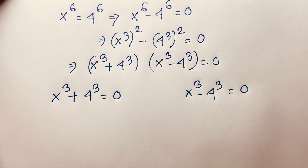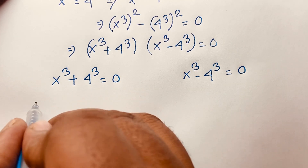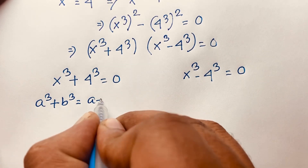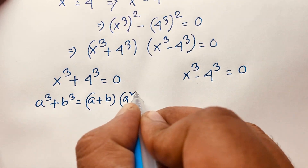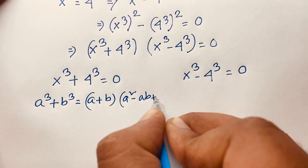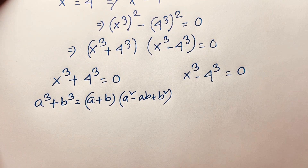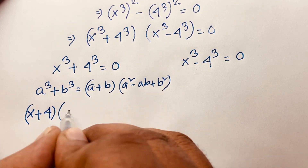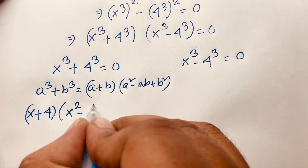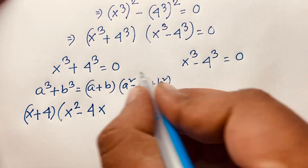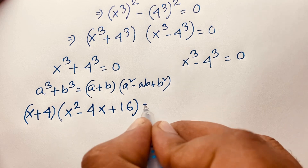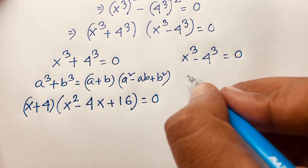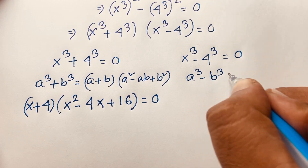Now we know that a cube plus b cube equals a plus b times a squared minus ab plus b squared. According to this formula, the first expression becomes: x plus four, times x squared minus four times x plus four squared, equals zero. So that is x plus four, times x squared minus four x plus sixteen, equals zero.